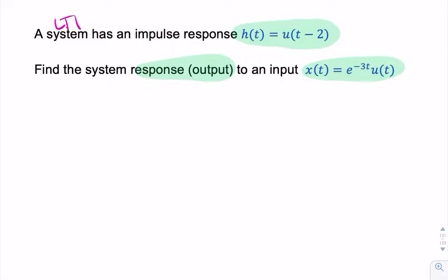So what we want is the output, so that's y of t, and that's simply x of t convolved with h of t. And remember, the convolution integration is simply x of alpha, or tau, times h of t minus alpha, d alpha.